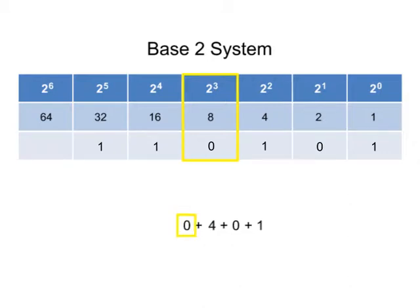We do this conversion for each place value of the binary number. Thus, adding up all the decimal numbers gives 53.